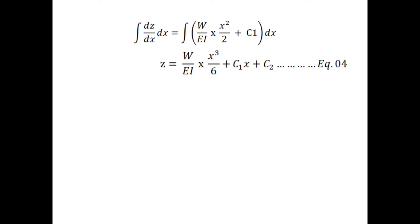Modulus of elasticity represents the material type, and the second moment of inertia represents the dimensions of the beam. The constant values depend on the support conditions and the load applied conditions. For this practical, simple supports are applied at one-fourth span of the total length of the beam from both ends, and the load is applied at the middle point. Under these support conditions, dz over dx equals 0 at the middle point and deflection equals 0 at the support points.